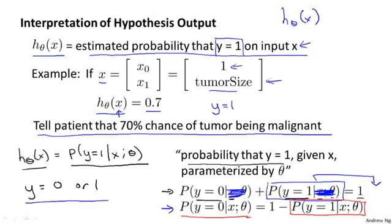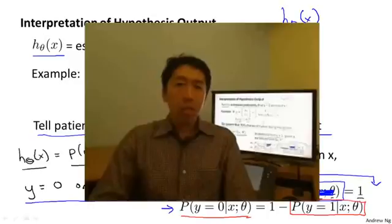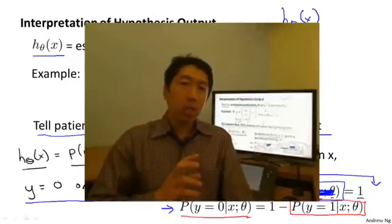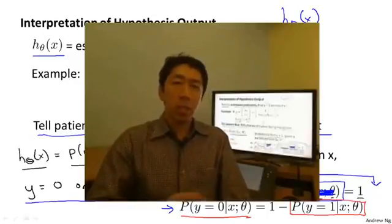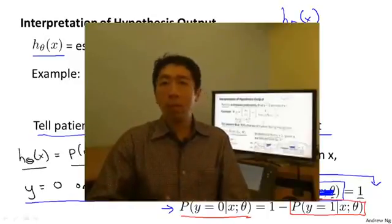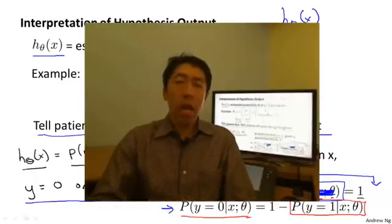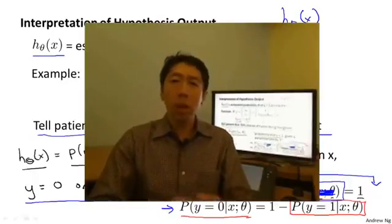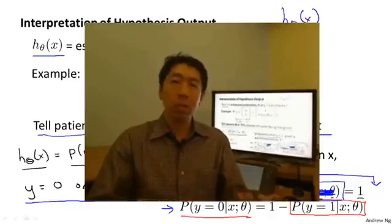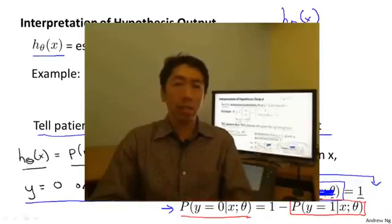So you now know what the hypothesis representation is for logistic regression and what the mathematical formula is defining the hypothesis. In the next video, I'd like to give you better intuition about what the hypothesis function looks like, and I want to tell you about something called the decision boundary. We'll look at some visualizations together to get a better sense of what this hypothesis function of logistic regression really looks like.